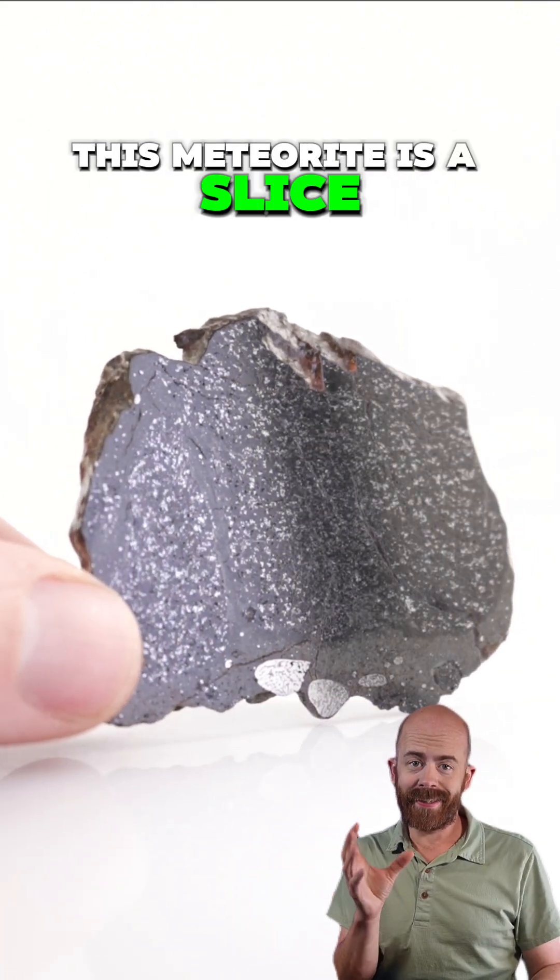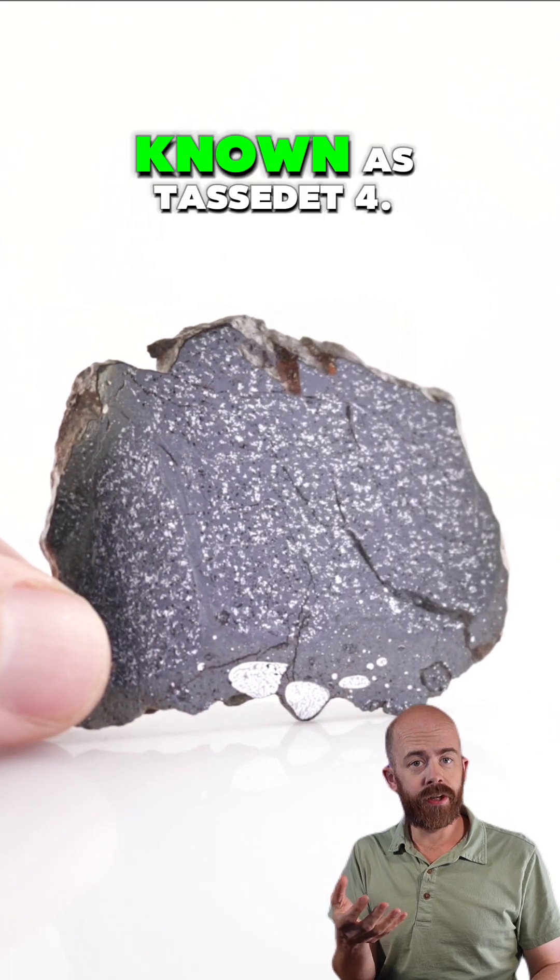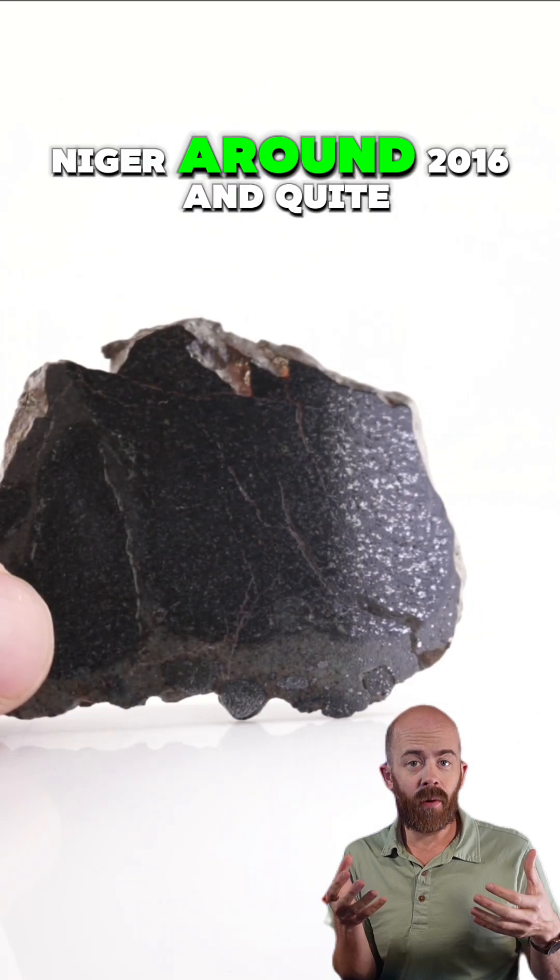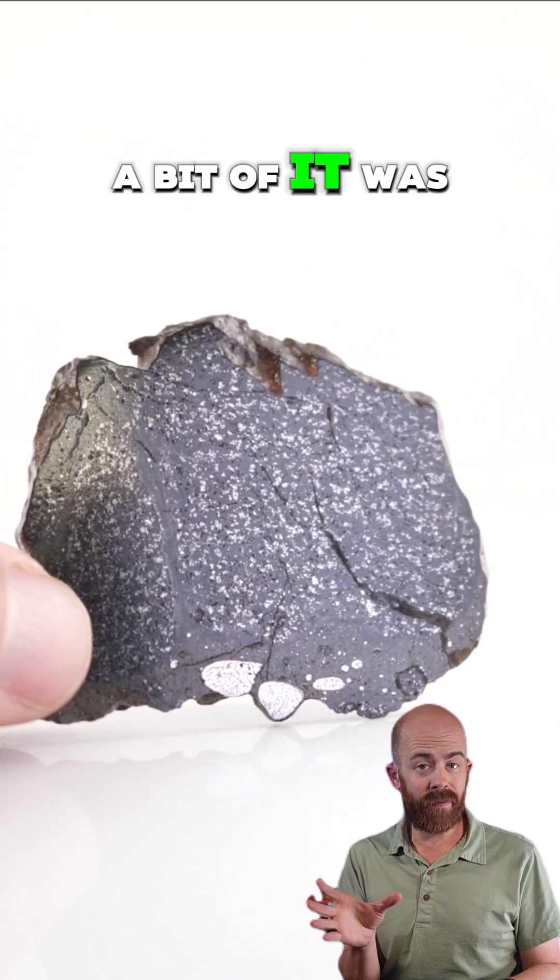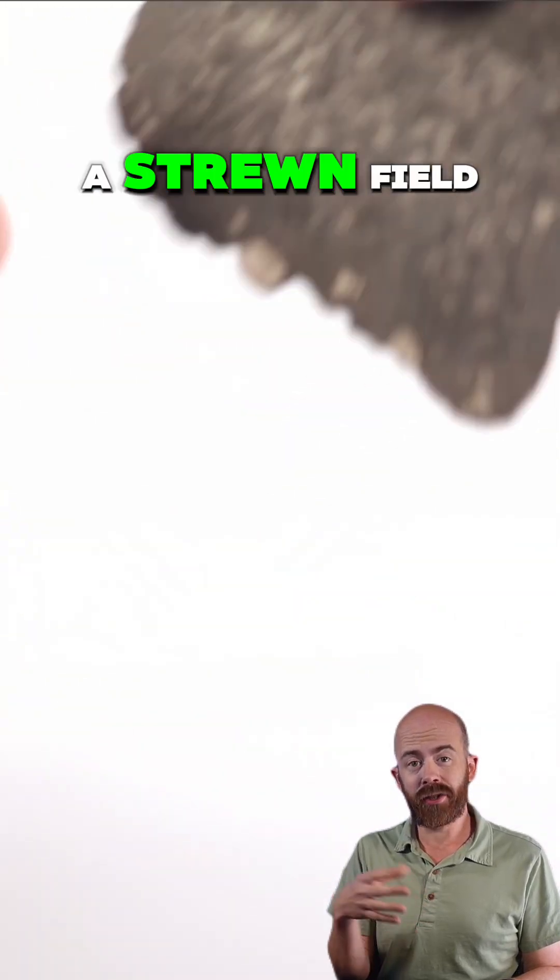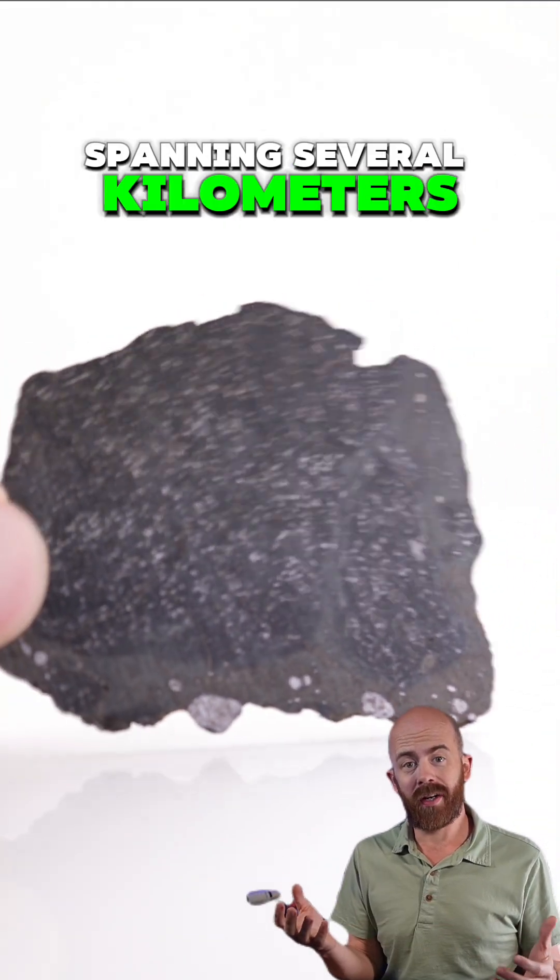This meteorite is a slice of an official classification known as Tassadet IV. It was discovered in Agadez Niger around 2016, and quite a bit of it was found there, something like 400 kilograms in a strewn field spanning several kilometers.